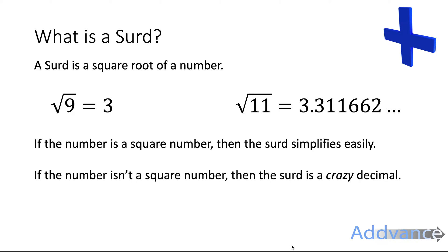If the number is a square number, then the surd simplifies easily. The square root of 25 is 5, the square root of 100 is 10. If the number isn't a square number, then the surd is a crazy decimal. And it's easy just to not write the decimal out and just write it as an accurate square root of a number.